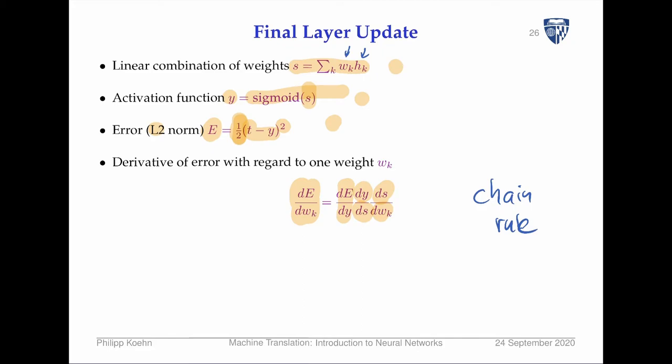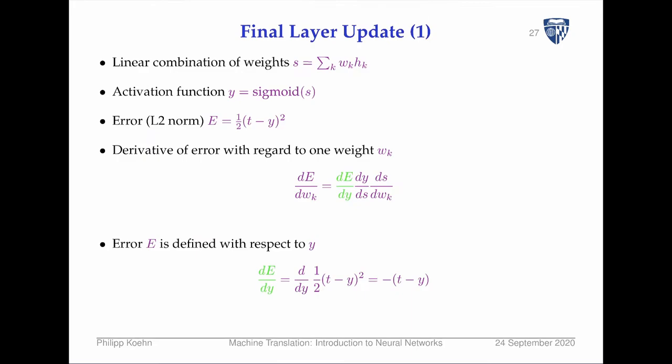This chain rule is what really makes everything work well. It's a very mechanical application of differentiation. Since in neural networks we chain together operations, we can apply the chain rule throughout and the whole thing can be automated. All the math we're doing over the next pages is to make clear how it works, but you actually never have to do this math yourself.